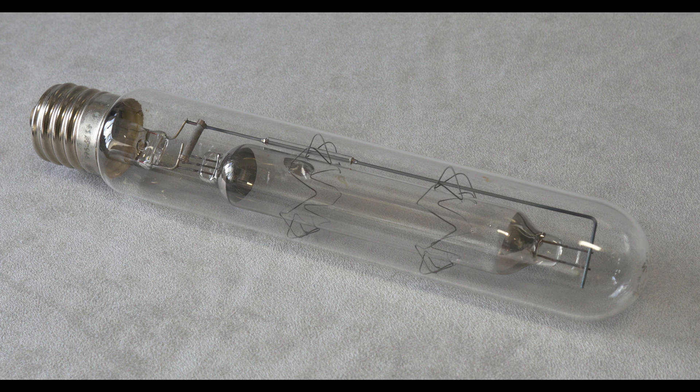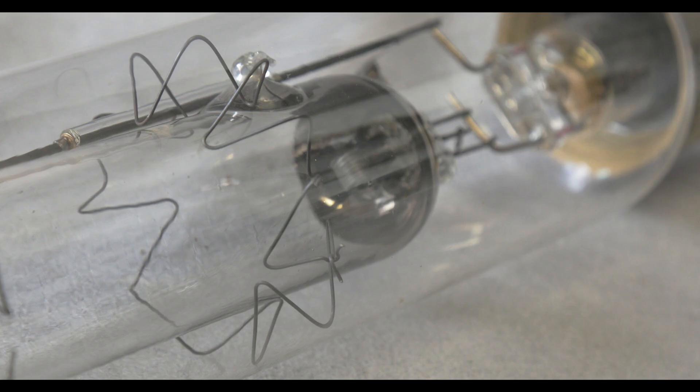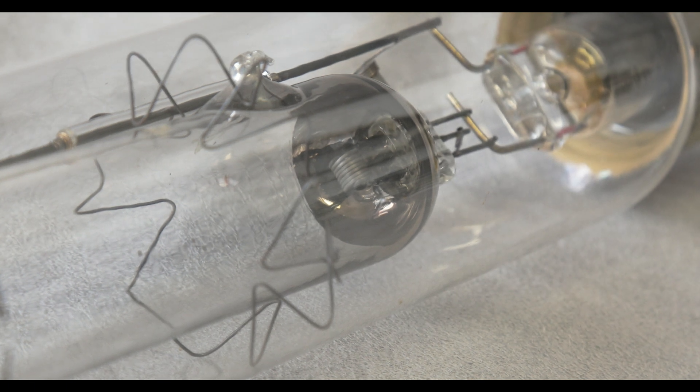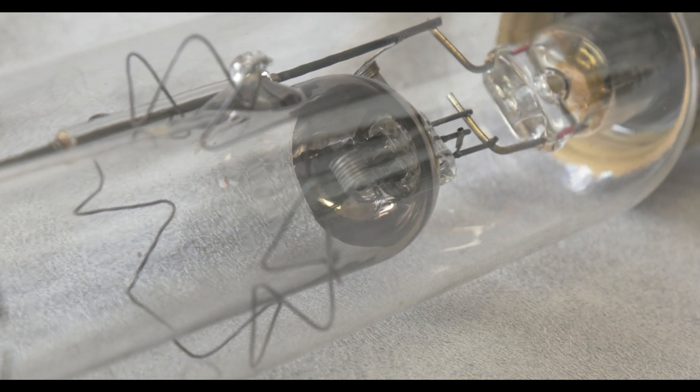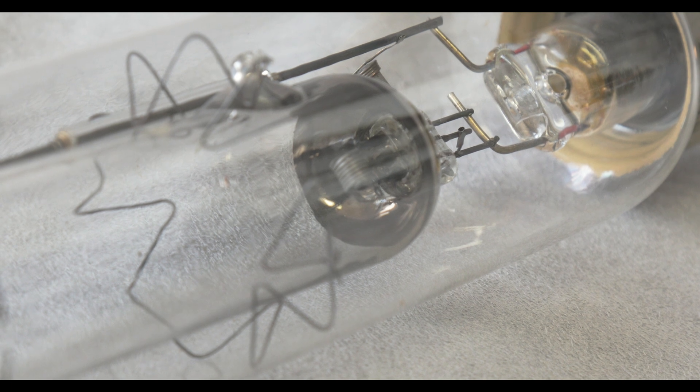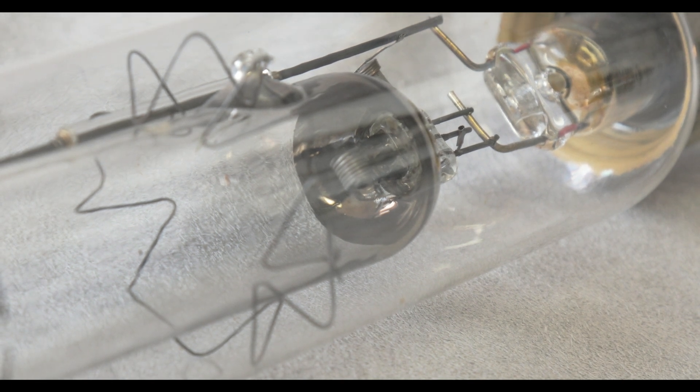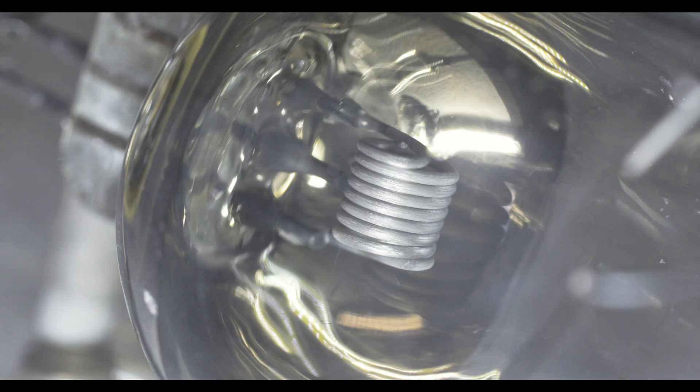So anyway, let's have a quick look at the details and then we'll fire it up. Here we can see the arc tube support, basically a spring that keeps it centralized. Behind that at the top you can see the exhaust tip and we can also see what are the electrodes. That's quite an unusual electrode when you compare it to modern lamps.